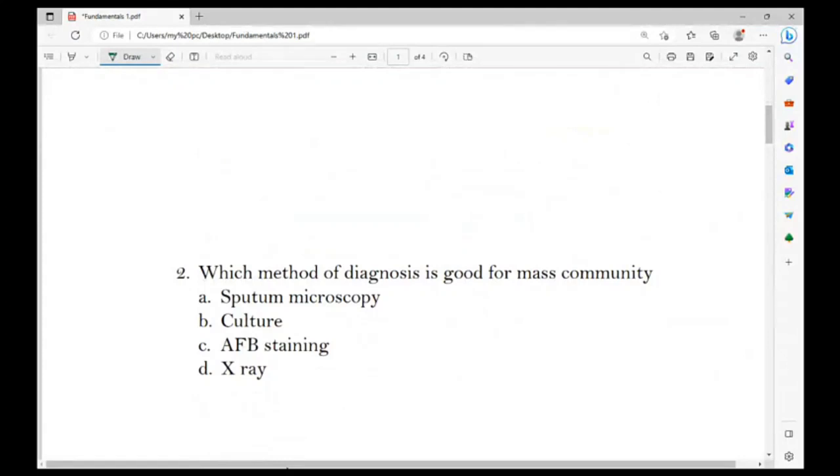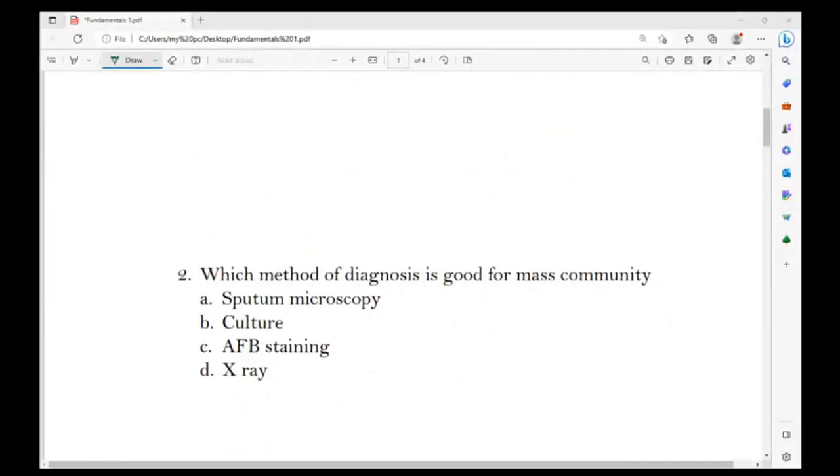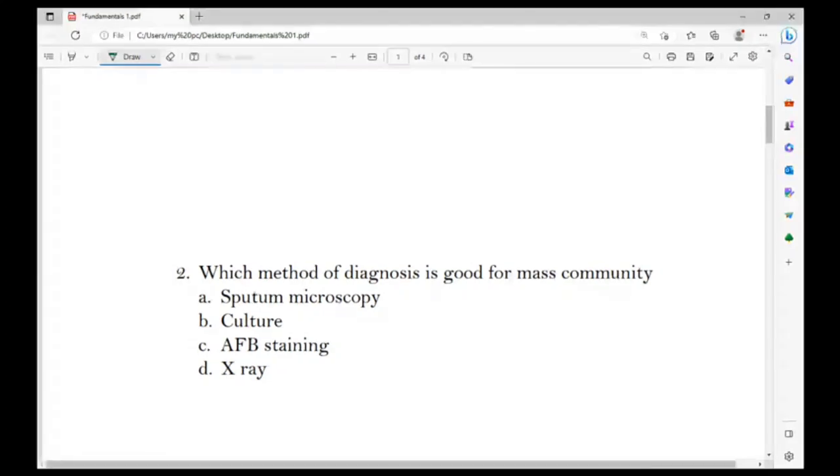Which method of diagnosis is good for mass community? Options: sputum microscopy, culture, AFB staining, X-ray. Which method of diagnosis is good for mass community for TB diagnosis?